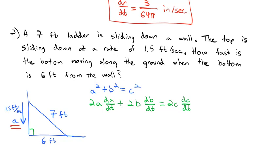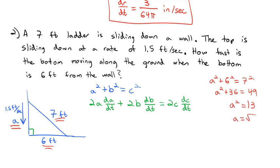We can figure out how long A is using the Pythagorean theorem: 7² equals 6² plus A². So A² plus 36 equals 49, meaning A² equals 13, and A is the square root of 13. At this moment, we're the square root of 13 feet up the wall.